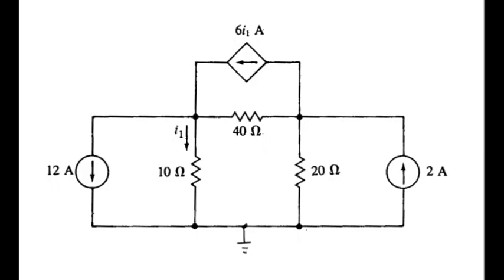We're looking for all the node voltages in this circuit. We'll be doing node analysis. So I'll call those two node voltages that we need to find, VA and VB.